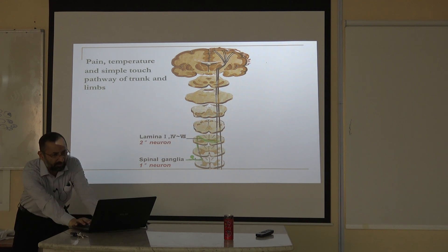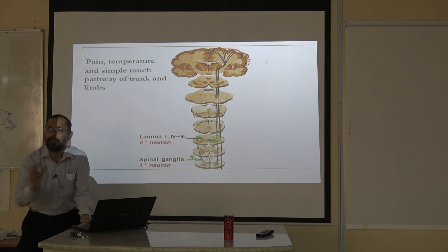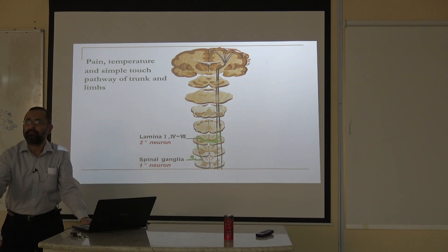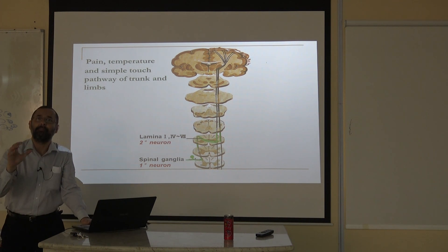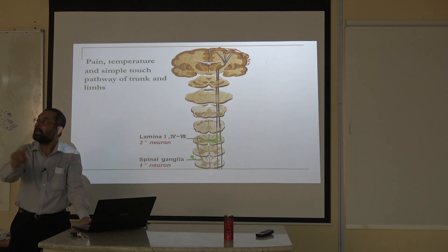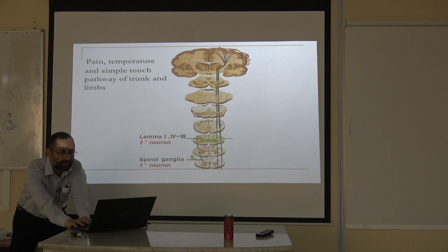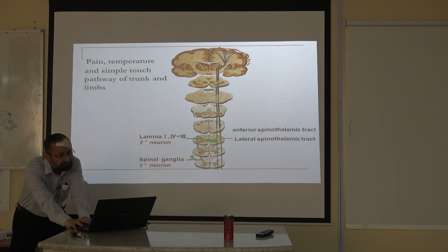After crossing over, they will ascend. We're talking about the pain, temperature, and simple touch pathway — the spinothalamic system, both lateral and anterior pathways. Both lateral and anterior go up, forming what is called the spinal lemniscus. It's not always written but it is a lemniscus.